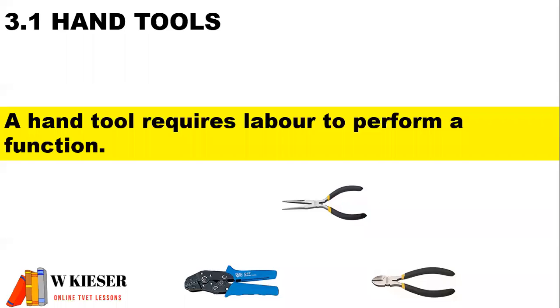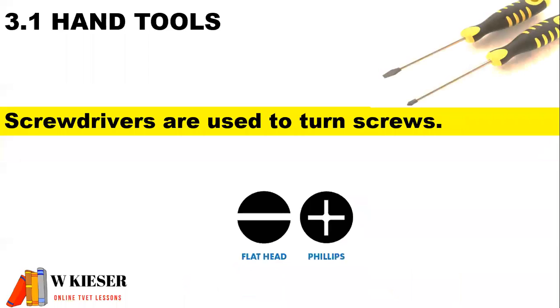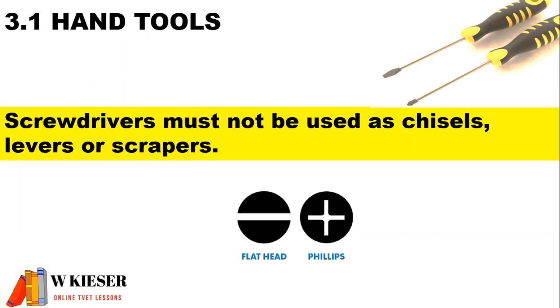A hand tool requires labor to perform a function. Screwdrivers are used to turn screws. Screwdrivers must not be used as chisels, levers, or scrapers.